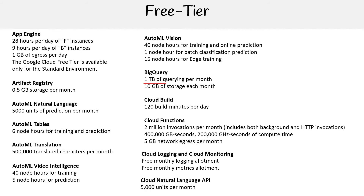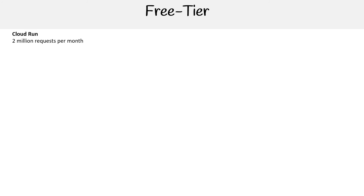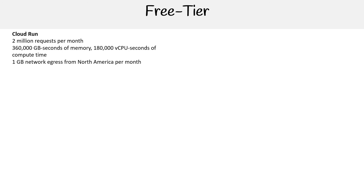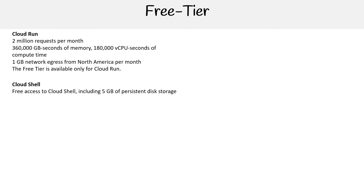For Natural Language, you get 5,000 units per month. For Cloud Run, you get 2 million requests per month, 360,000 gigabyte-seconds of memory, 180,000 vCPU-seconds of compute time, and one gigabyte of network egress from North America per month — the free tier is available only for Cloud Run. Cloud Shell is free access including five gigabytes of persistent disk storage, so don't fear spinning up Cloud Shell — it's a very useful tool. Cloud Source Repository supports up to five users, 50 gigabytes of storage, and 50 gigabytes of egress.